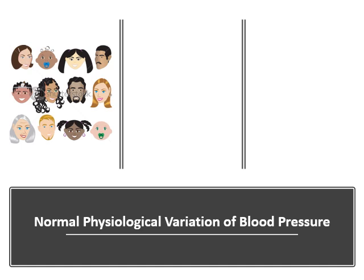Diurnal variation is another normal physiological factor — blood pressure is lowest early in the morning when there is minimal sympathetic stimulation, and higher at midday or later. After meals, there is a normal increase of 5 to 10 mmHg, mainly in systolic pressure, due to vasodilation in the splanchnic area causing increased venous return and cardiac output. Obesity also increases blood pressure by 5 to 10 mmHg due to increased vessel length increasing total peripheral resistance.